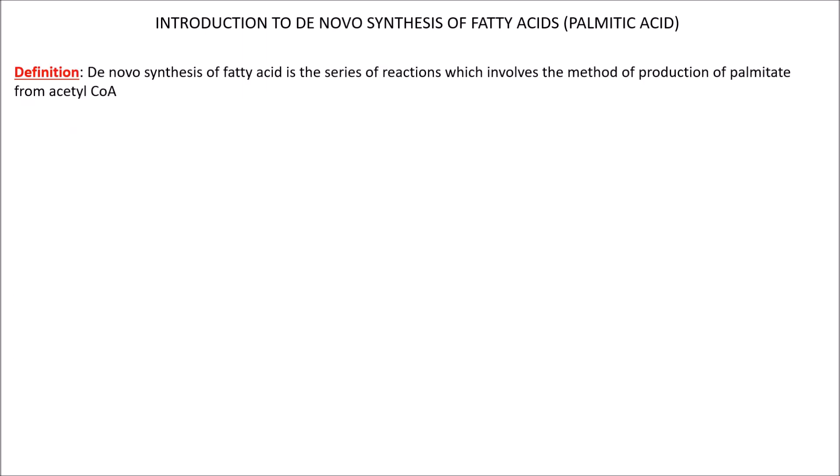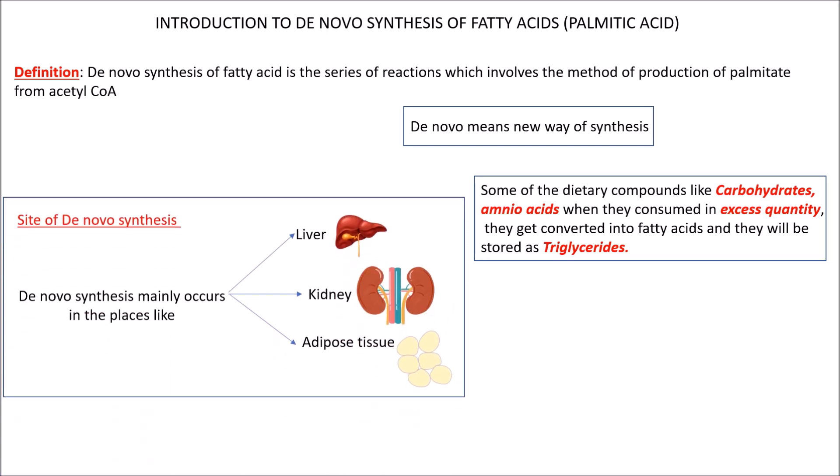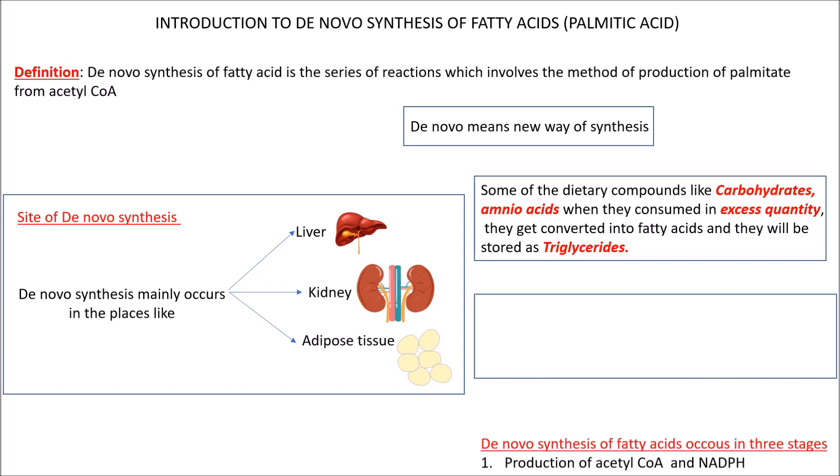De novo synthesis of fatty acids is a series of reactions involving the production of palmitate from acetyl coenzyme A. De novo synthesis means a new way of synthesis. Some dietary compounds like carbohydrates and amino acids, when consumed in excess quantity, get converted into fatty acids and stored as triglycerides in our body. The site of de novo synthesis is the liver, kidney, and adipose tissue.